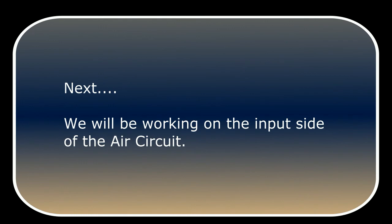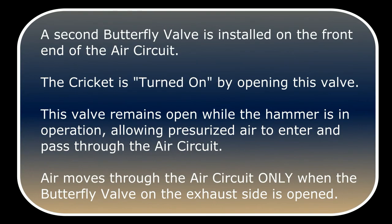Next, we'll be working on the input side of the air circuit. A second butterfly valve is installed on the front end of the air circuit. The cricket is turned on by opening this valve. This valve remains open while the hammer is in operation, allowing pressurized air to enter and pass through the air circuit. Air moves through that air circuit only when the butterfly valve on the exhaust side is opened.